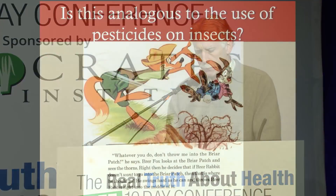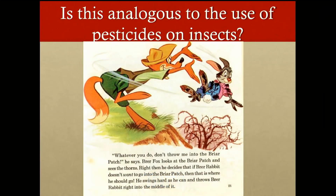When we apply chemicals to crops in the hopes of killing our pests, we're challenging them to do the one thing that they do better than anything else — and that is cope with chemical stress. As biological entities, they are capable of adapting to the chemical stresses in their environment in a short amount of time.